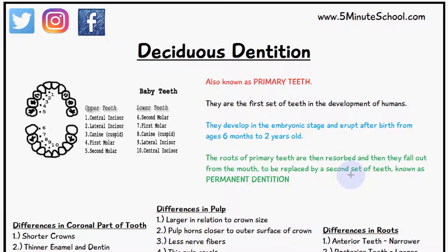The roots of the primary teeth are resorbed and then they fall out from the mouth to be replaced by a second set of teeth known as the permanent dentition. For the primary teeth we have the central and lateral incisors, we have the canine, and we have the first and second molar.